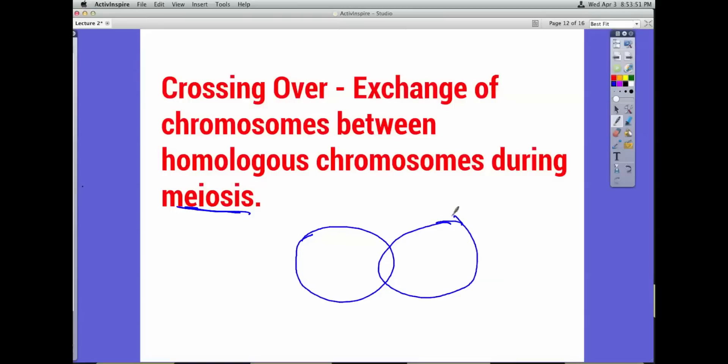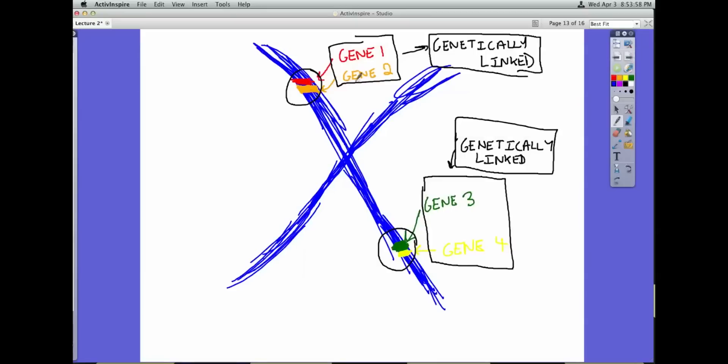So imagine that these two cells are dividing during meiosis. One goes this way, one goes the other way. And sometimes during this process, the homologous chromosomes switch.